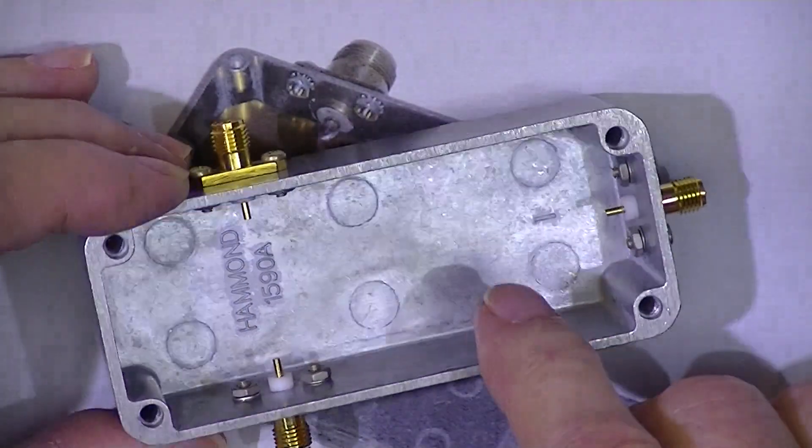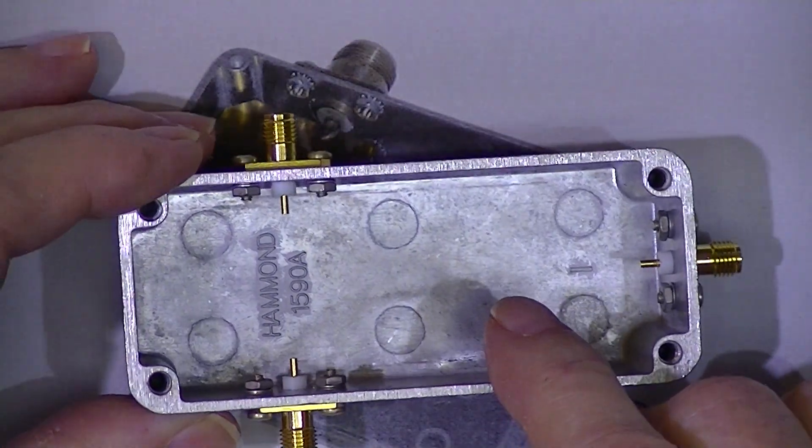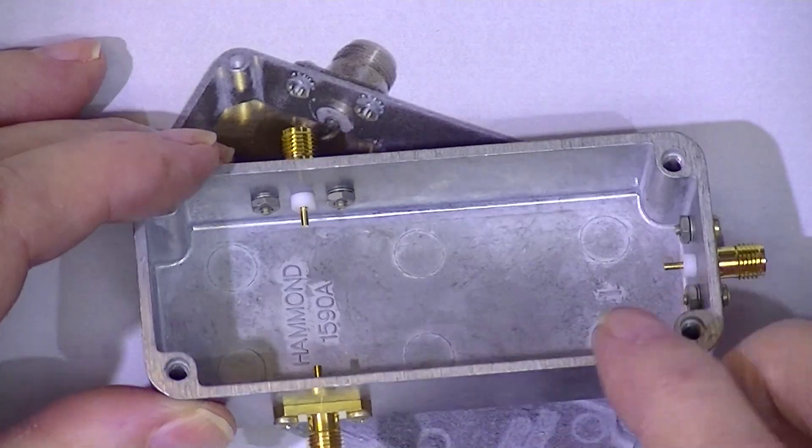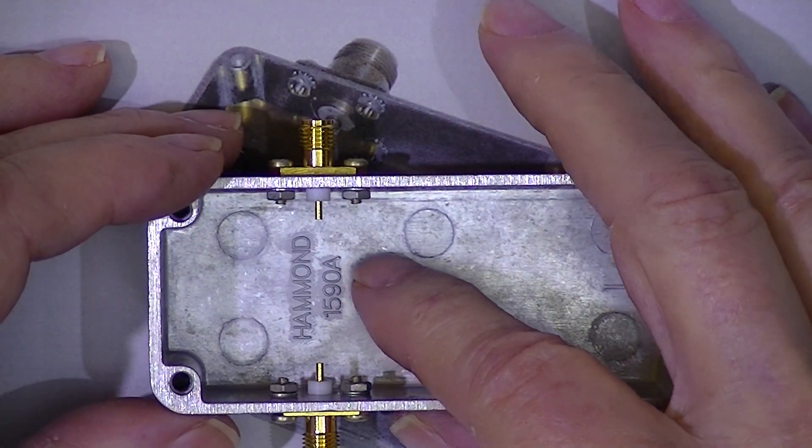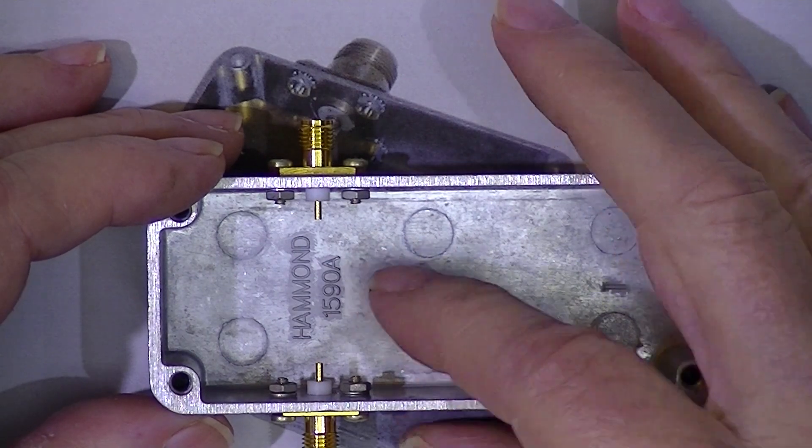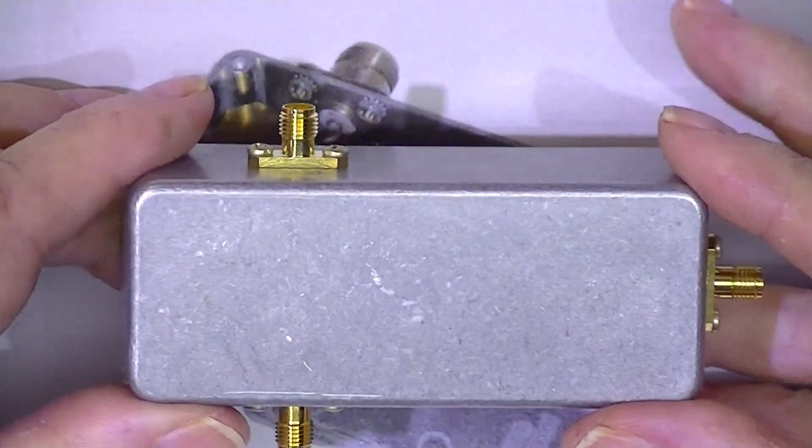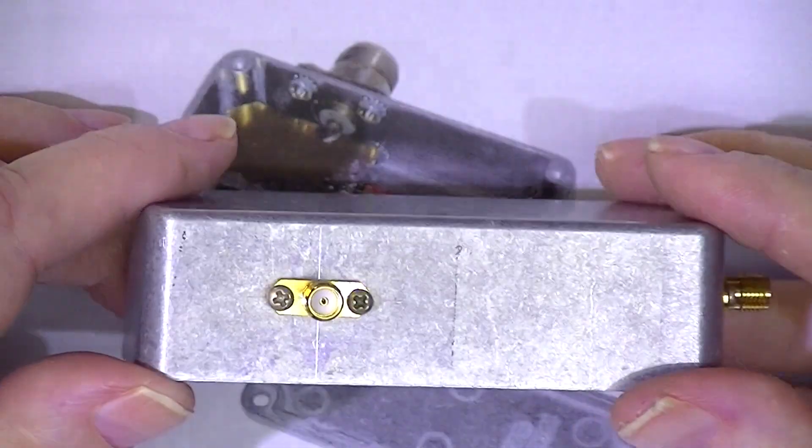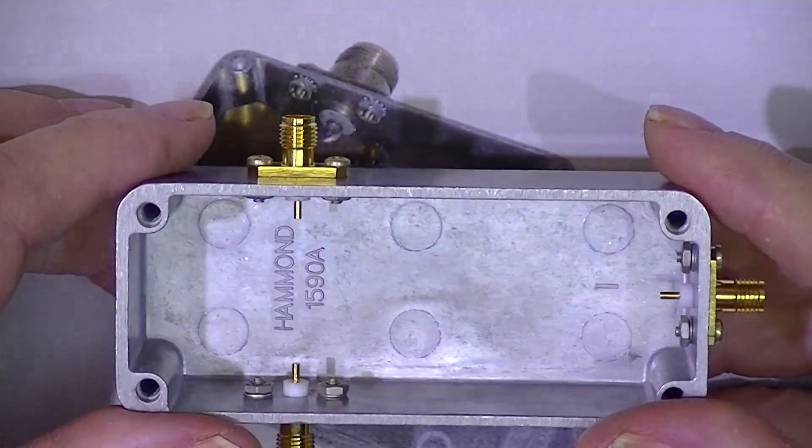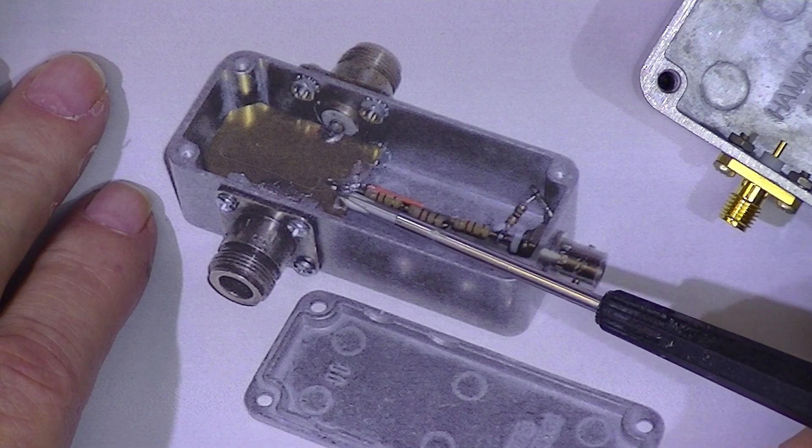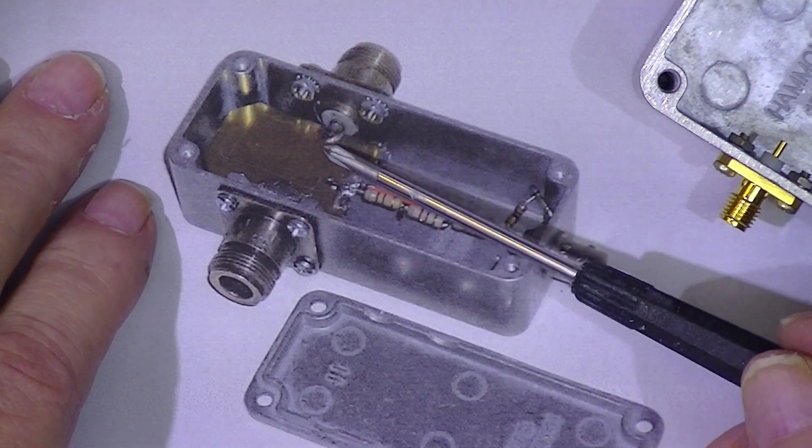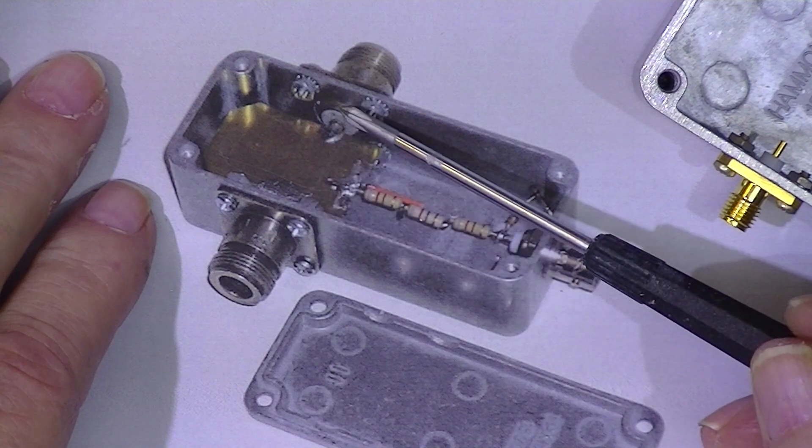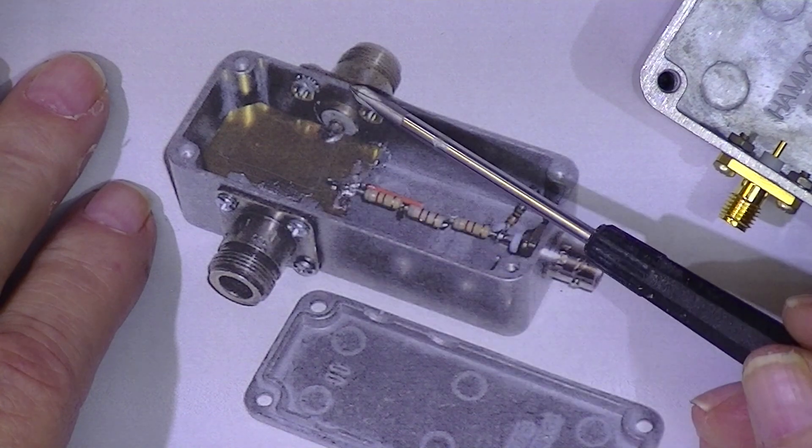an uncoated box. The Hammond 1590A is uncoated, but there are versions of this size box that have enamel or some sort of colored paint applied to them. The next thing to do is to build this metal plate. It connects the two center conductors of these two connections